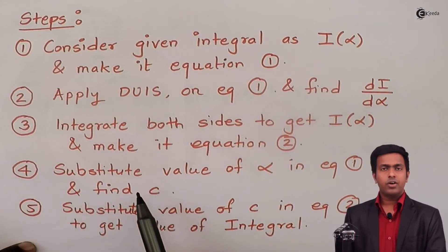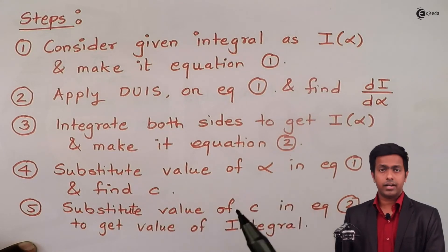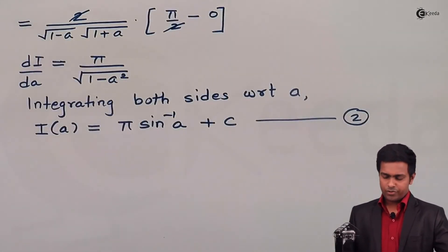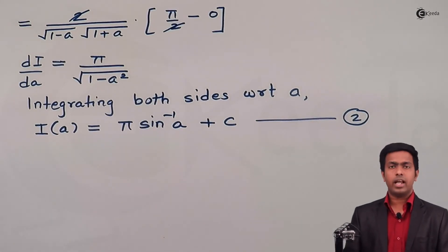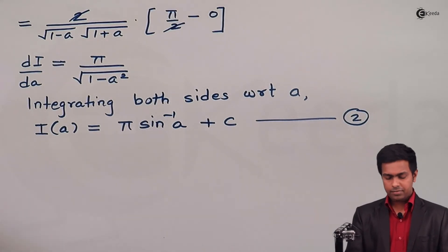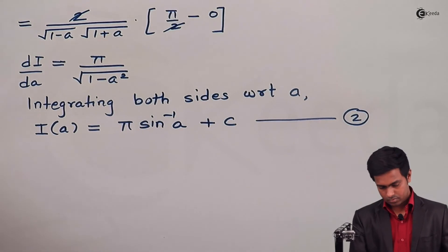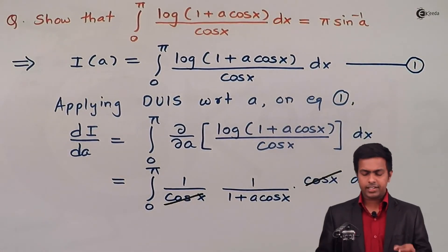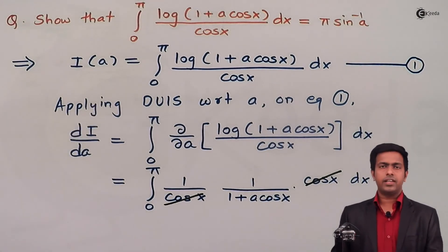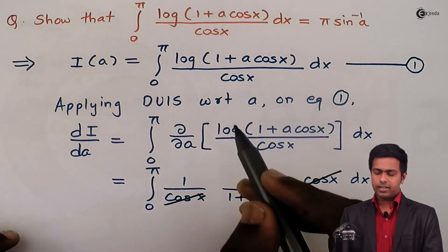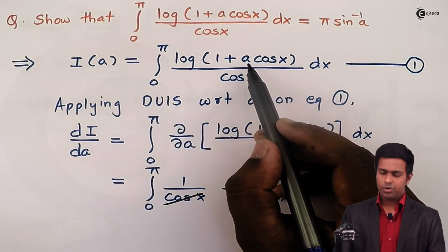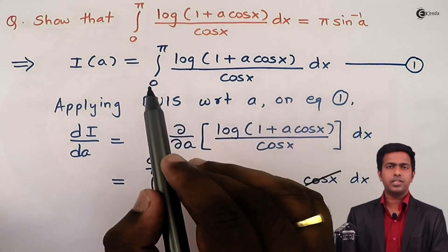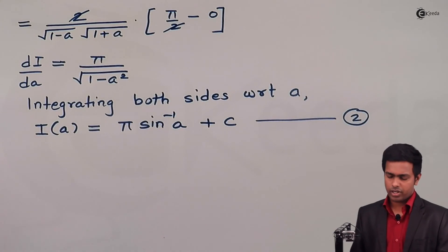According to step number four, we substitute a value of a in equations one and two to find the constant of integration c. We select a value of a such that the integral will be finite. Here we choose a = 0, because this gives log(1 + 0) = log(1) = 0, making the entire integral zero, so I(0) = 0.